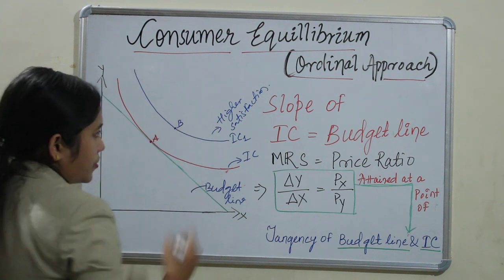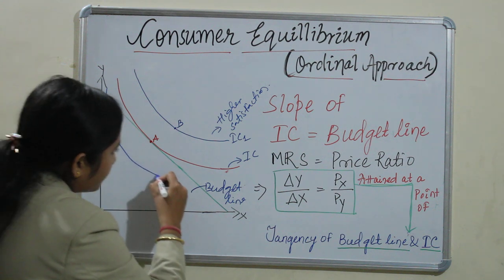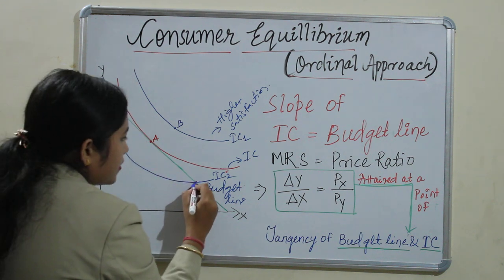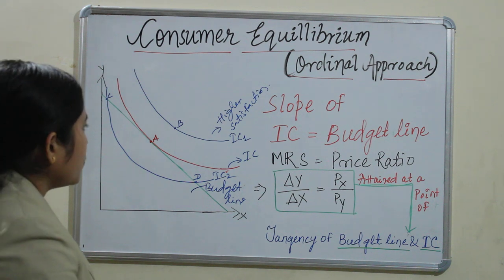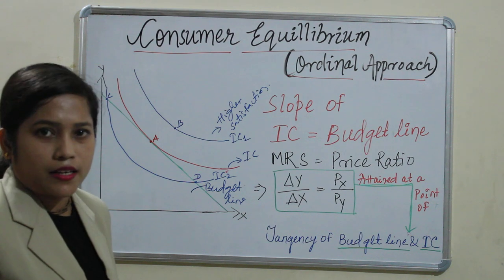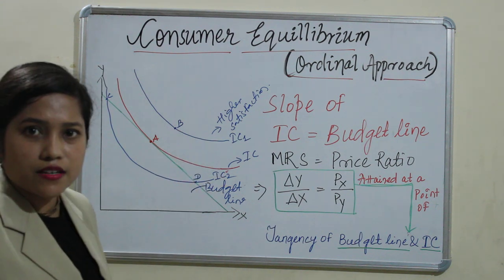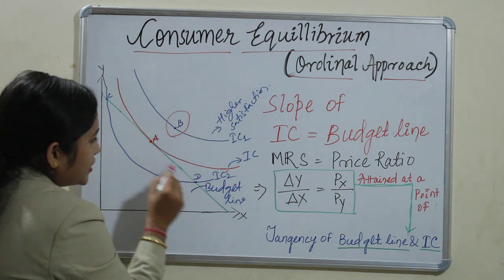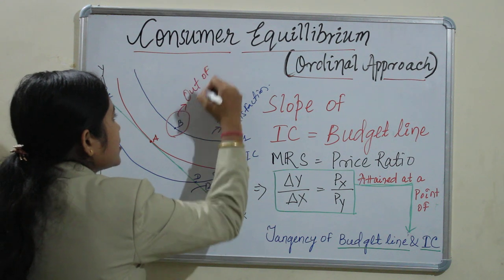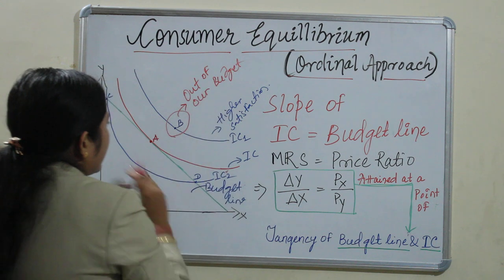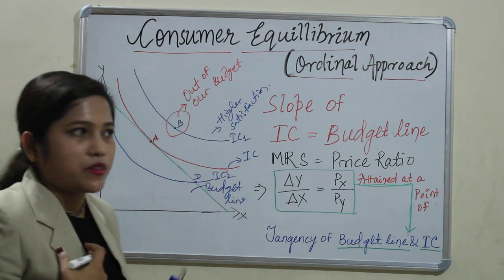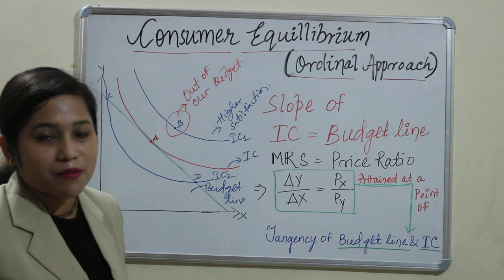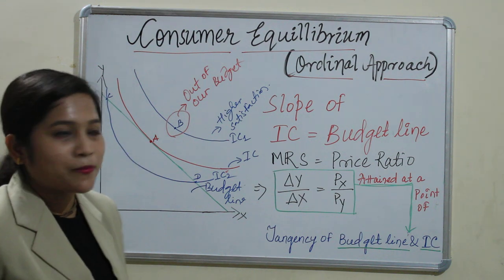Let's say we take point B on IC1. Point B also we could take because it is giving higher satisfaction. But we cannot take B because it is out of our budget — it is outside our budget. Like, we have 100 rupees but this is giving us a challenge of expenditure of 200 rupees. We cannot do expenditure up to 200, so this option is cancelled.